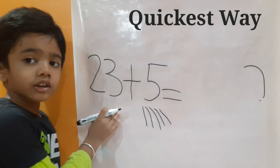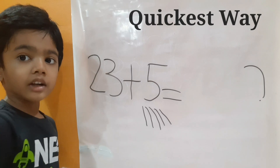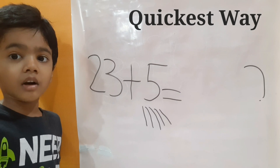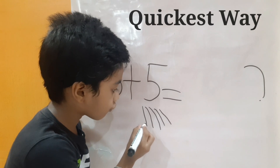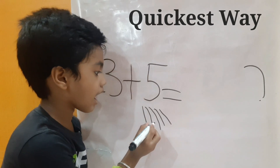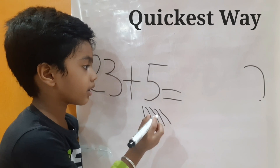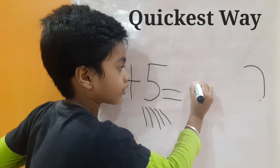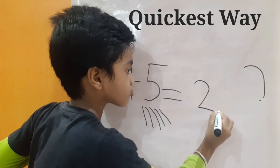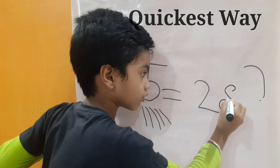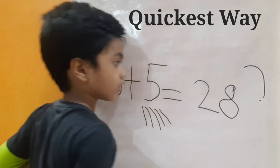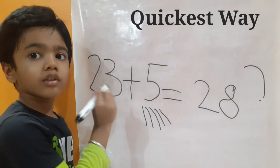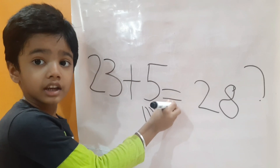On the left side we have 23. So what comes after 23? 24. So let's count from 24: 24, 25, 26, 27, 28. So the answer is 28. 23 plus 5 equals to 28.